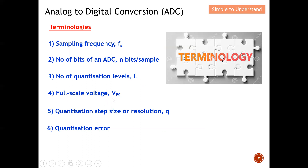Next will be full scale voltage, called VFS. This basically defines the dynamic range of the analog signal from the minimum all the way to the maximum. Number 5, I'm going to describe what is quantization step size or resolution Q. This Q is closely related to L and also the number of bits. Last but not least, number 6, I'm going to describe what is the maximum possible quantization error. You will be able to understand all 6 terminologies in order to fully understand the process of analog to digital conversion.